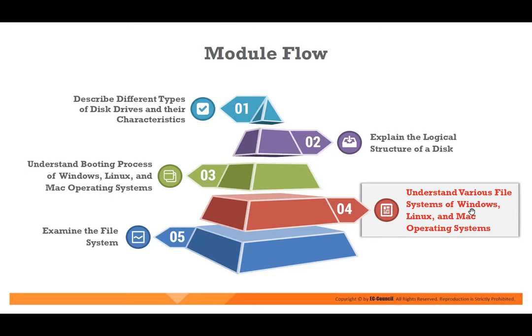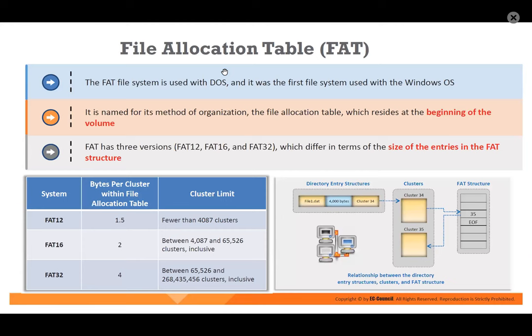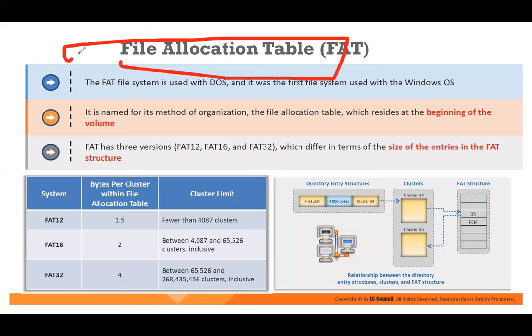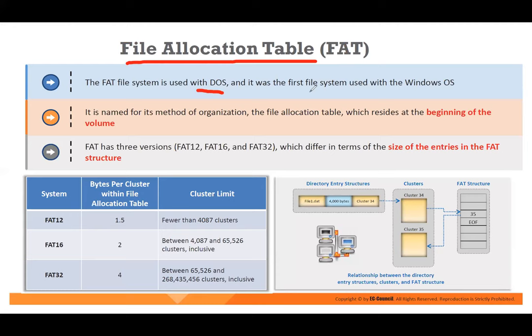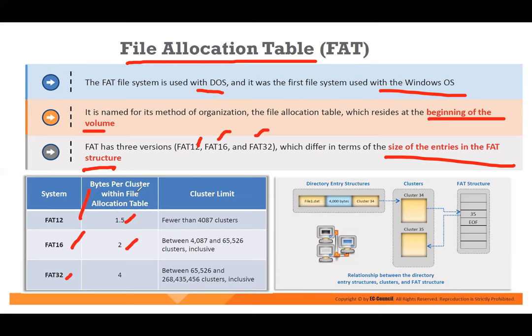Let us understand the various Windows file systems. There are two main ones: FAT — file allocation table — with versions FAT12, FAT16, and FAT32, mainly used in DOS and previous systems. FAT resides at the beginning of the volume. FAT12 uses 1.5 bytes per cluster, FAT16 uses 2 bytes per cluster, and FAT32 uses 4 bytes per cluster within the file allocation table.